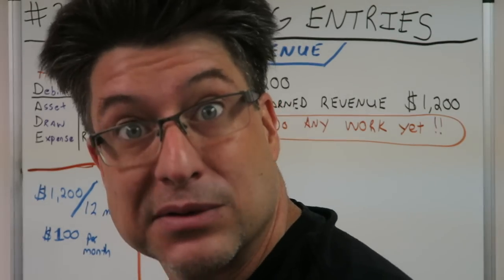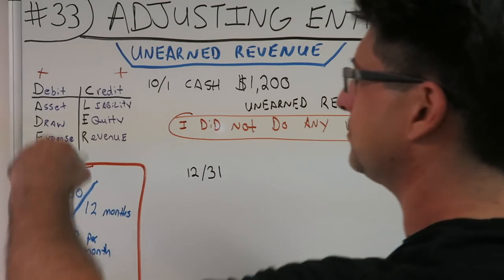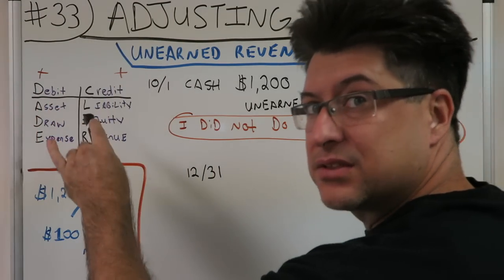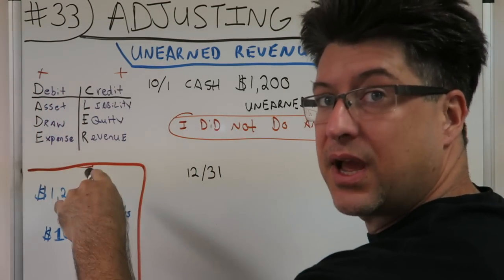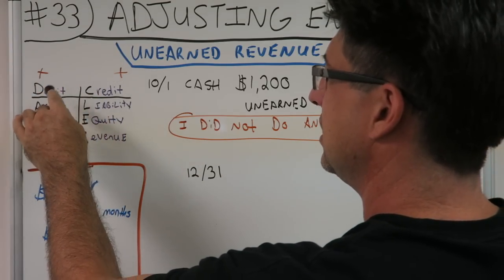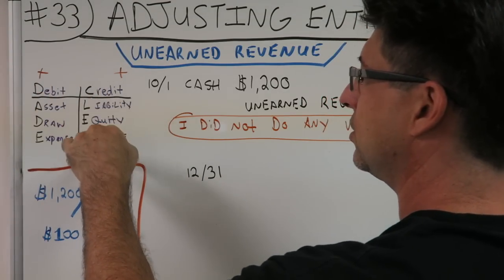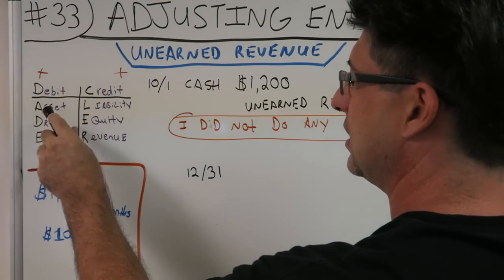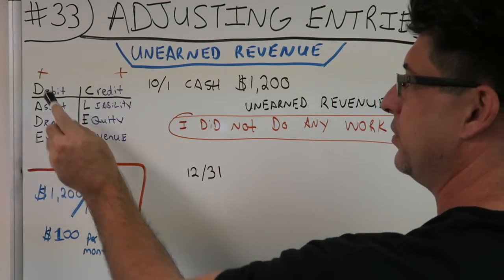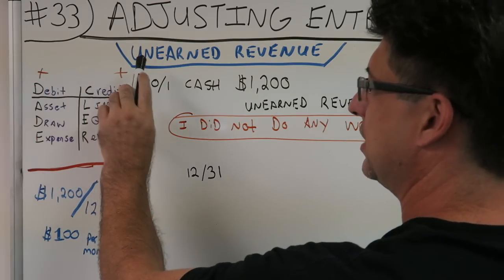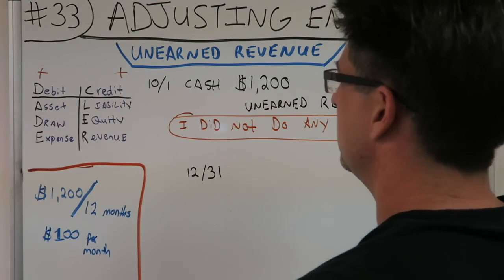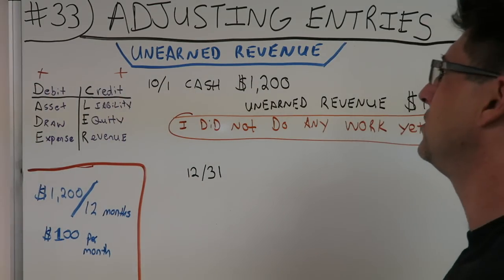Quick housekeeping: you already know DC AID ALER — debit, credit, asset, drug, expense, liability, equity, revenue — and their normal positive balances. Now we're doing unearned revenue today.